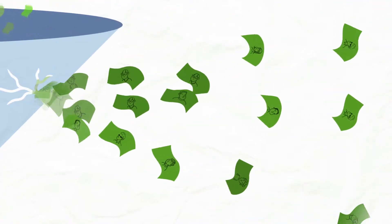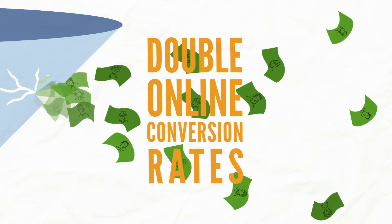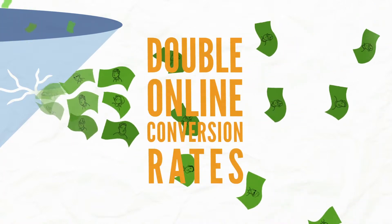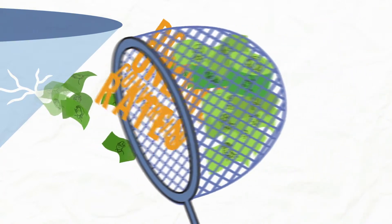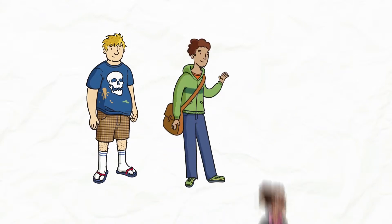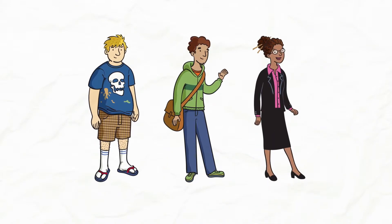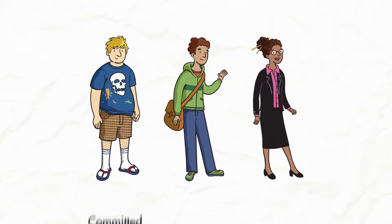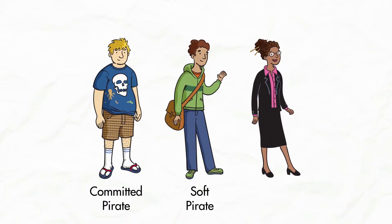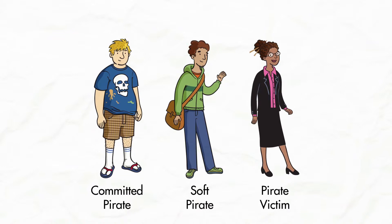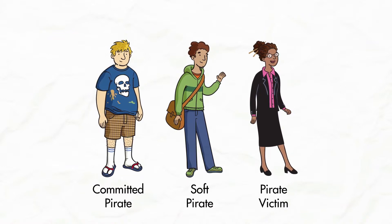We've seen companies double their online conversion rates by pursuing pirate users. So in order to convert that revenue, you need to know a little bit about who you're dealing with. When you're looking at these unlicensed users, you'll find that they fall into one of three categories.